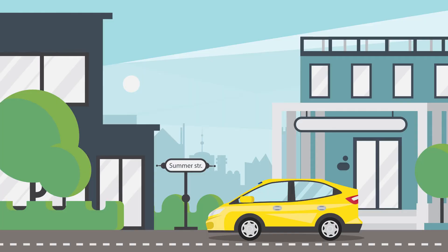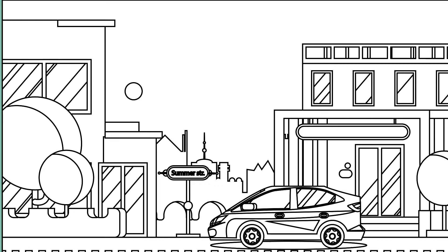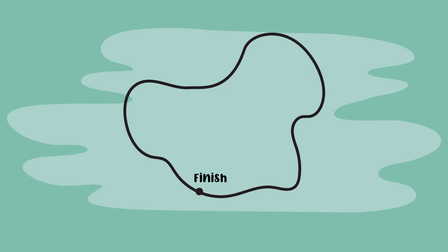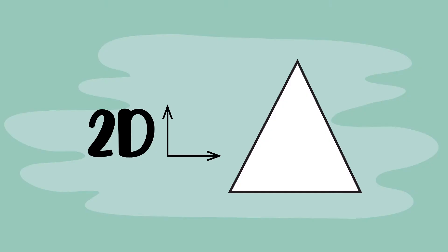Everything around us is made out of shapes. But what exactly is a shape? We typically think of a shape as a closed line. So if you take a line and enclose it, you would have created a shape. In art, shapes are flat and are defined by their length and their width. In other words, a shape is two dimensional.